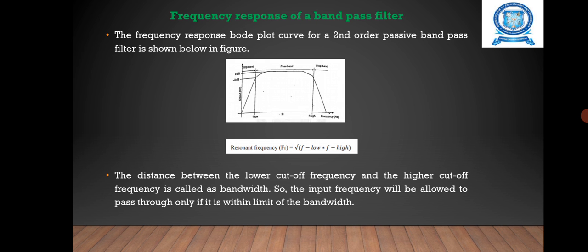The graph is plotted with input frequency on the x-axis and output in decibels on the y-axis. When the input frequency is less than the lower cutoff frequency, the output remains less than minus 3 dB.